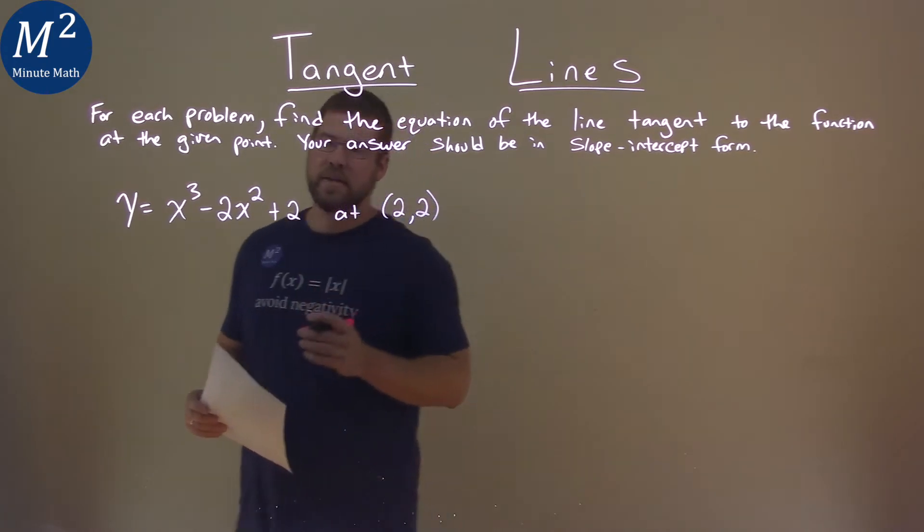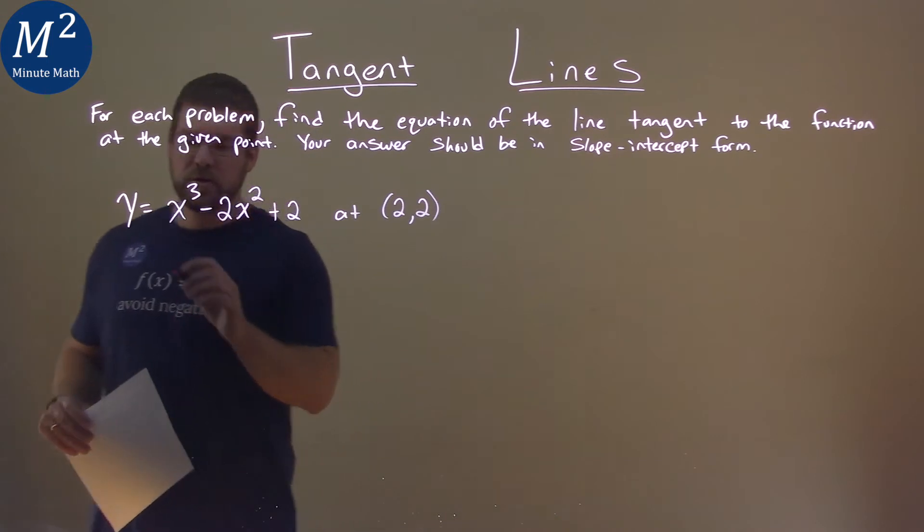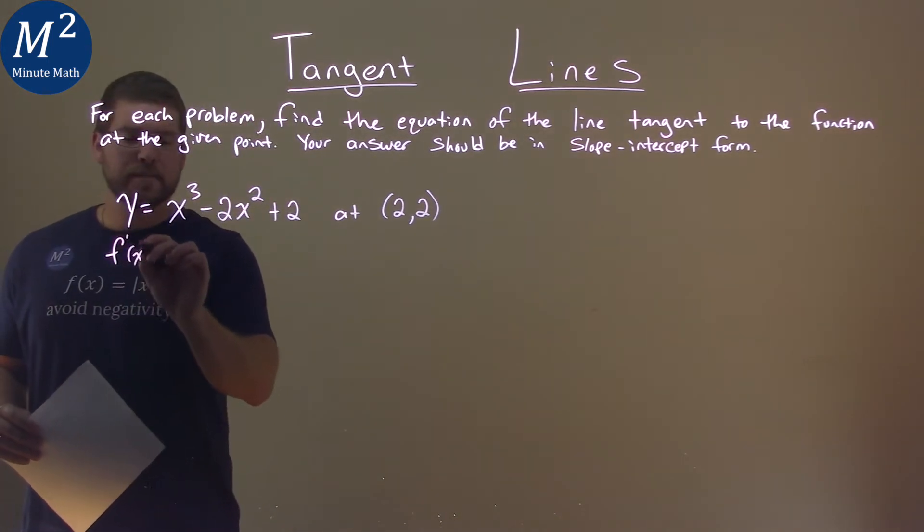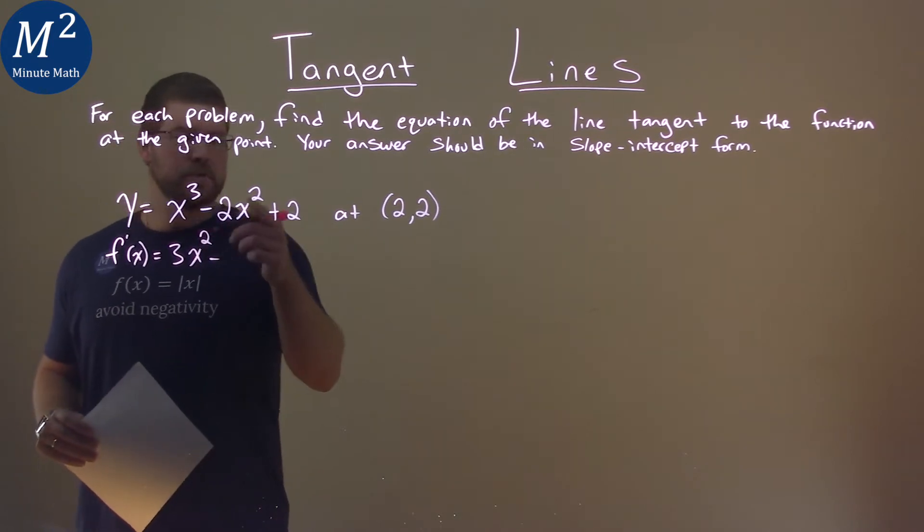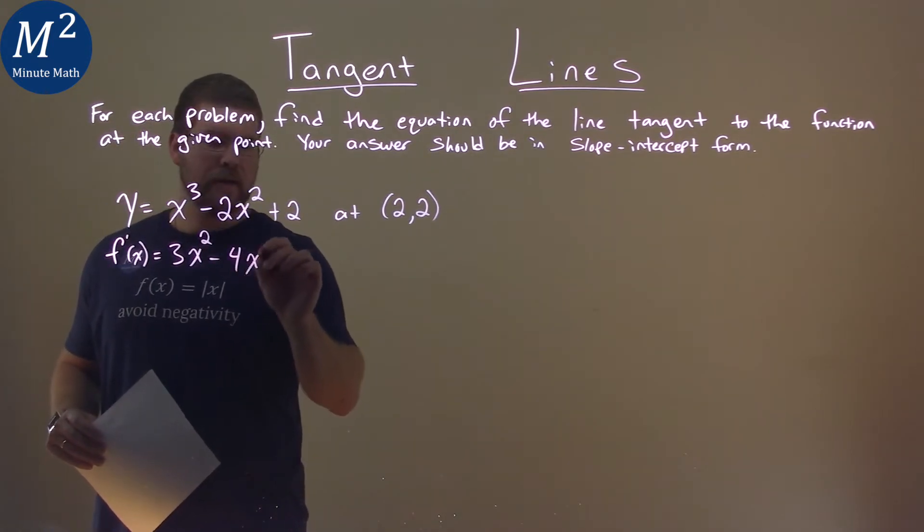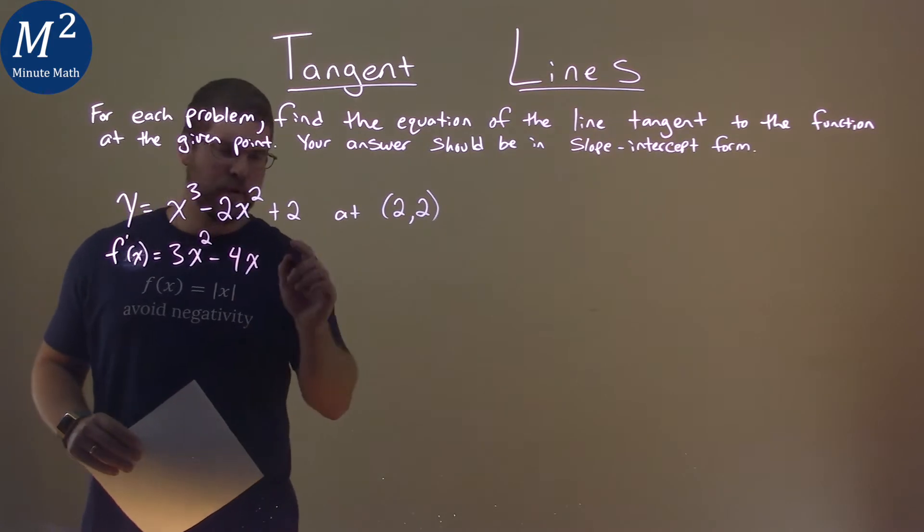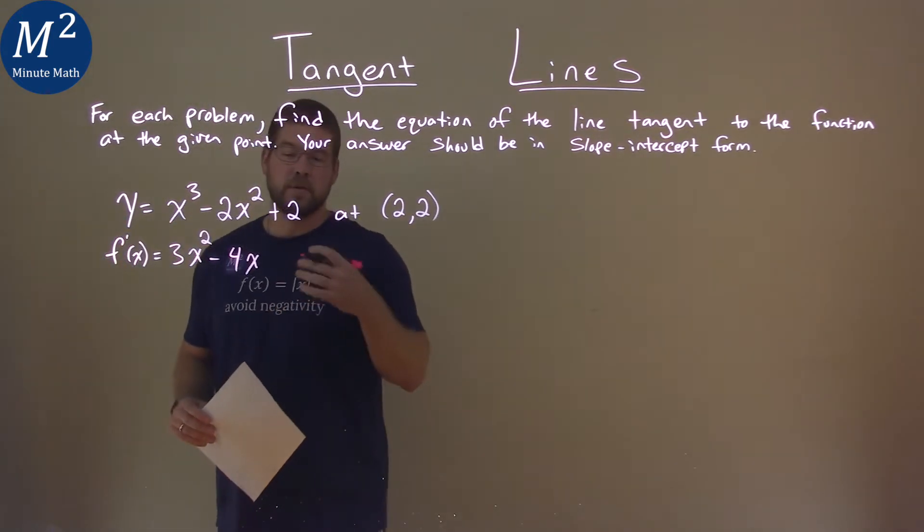Well, the first thing I like to do is find the derivative of our function. Let's call it f prime of x, and it's equal to, using the power rule, 3x squared minus 2 times 2 is 4, so 4x subtract the exponents by 1, which is 1, and the derivative of 2 is 0.